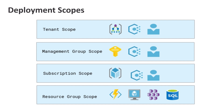Finally, at the top level, we've got the tenant scope. The tenant scope includes management groups, and then RBAC and policies again. You'll notice that the vast majority of things are still deployed at the resource group scope level — there's not a huge amount of resources that sit outside of that, but there are some. And if we want to deploy our whole environment using templates, we will need to be able to deploy at those different scope levels.